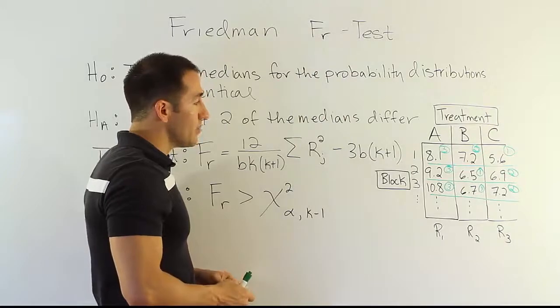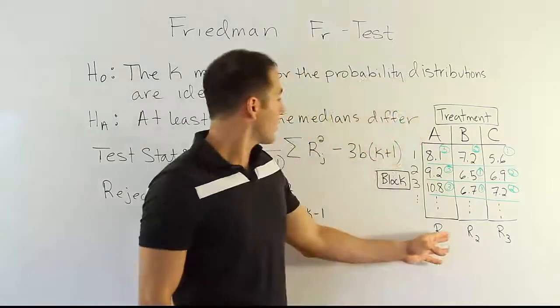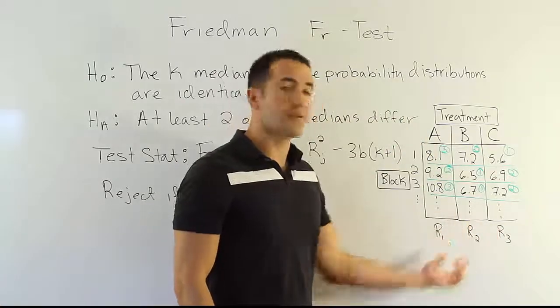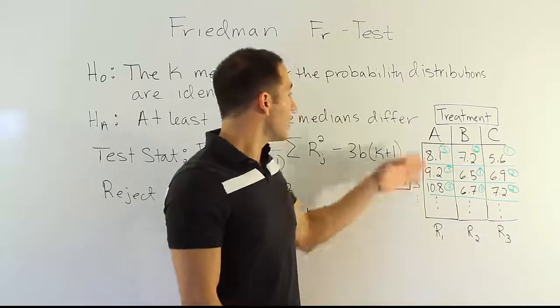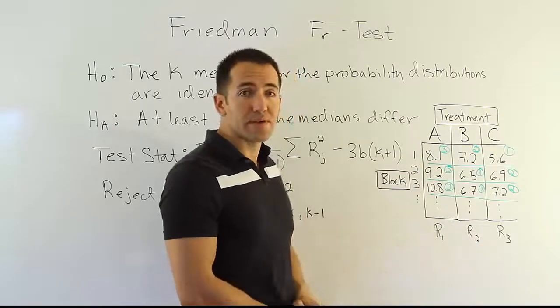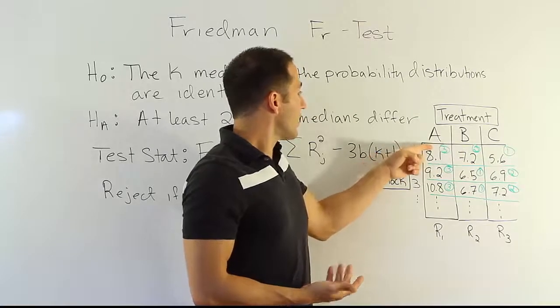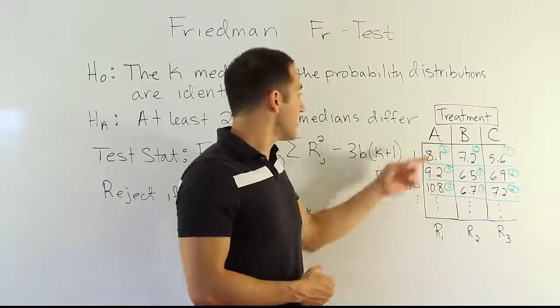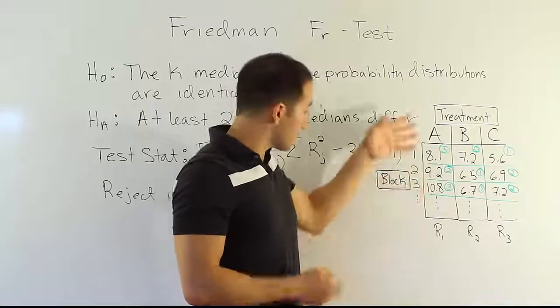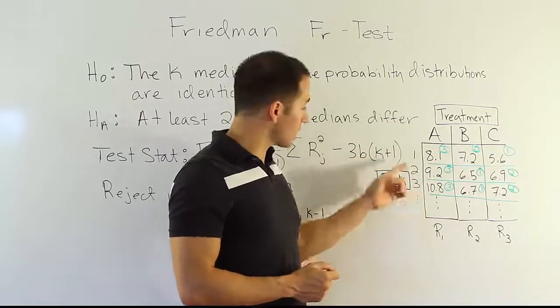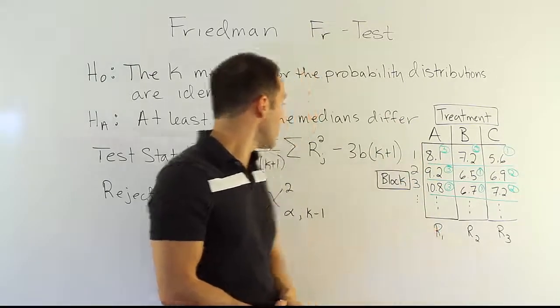And so the idea is pretty simple here. Obviously what will happen is that if one of the rank totals is much larger than the others, or one is much smaller than the others, we would be saying there's clearly a significant difference. Because, for subject 1, this drug had the longest reaction time, which means maybe it was the one that gave him the most drowsy effect. And if we see that consistently throughout all the subjects, it'll show up as a very high rank for treatment A. That would be the idea.